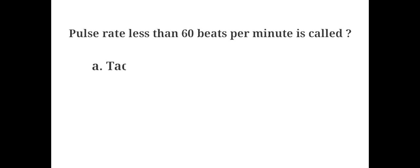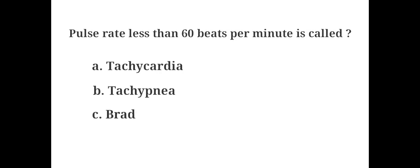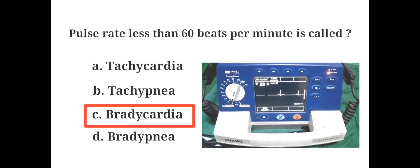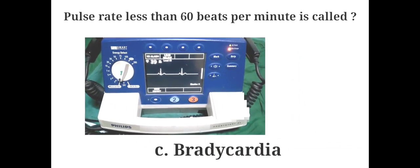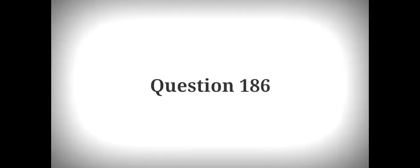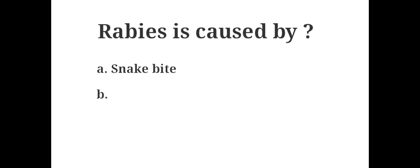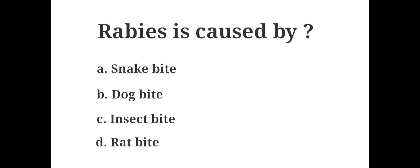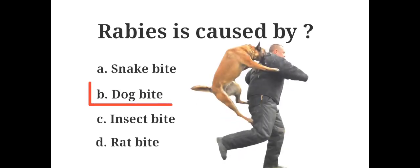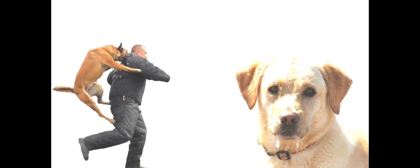Pulse rate less than 60 beats per minute is called: A. Tachycardia, B. Tachypnea, C. Bradycardia, D. Bradypnea. The answer is C. Bradycardia. Rabies is caused by: A. Snake bite, B. Dog bite, C. Insect bite, D. Rat bite. The answer is B. Dog bite. Rabies is a deadly virus spread to people from the saliva of infected animals, usually transmitted through a bite. In developing countries like India, dogs are the most likely reason to spread rabies to people.